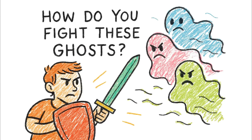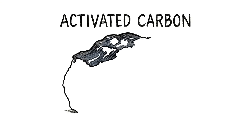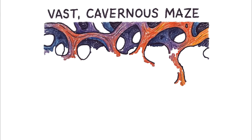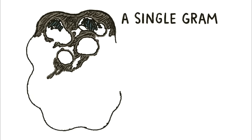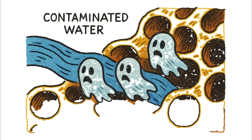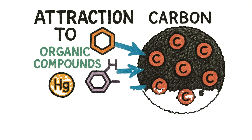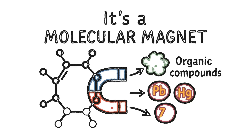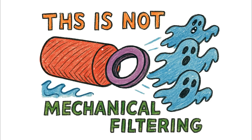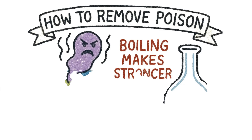So how do you fight these Ghosts? Not with heat, not with a simple screen — you fight them with chemistry. The solution is called adsorption, and the tool is activated carbon. Think of a piece of charcoal, but on a microscopic level it's not a solid block — it's a vast, cavernous maze of tunnels and pores. A single gram of this material can have the surface area of a football field. When contaminated water flows through it, the Ghosts aren't physically blocked like debris in a screen — they are chemically seized. The carbon atoms on the surface have a powerful attraction to these organic compounds and heavy metals. It's a molecular magnet. It latches onto them, pulling them out of the water and binding them permanently to its surface. This is not mechanical filtering — this is a chemical trap. The Ghosts check in, but they don't check out. That's how you remove the poison that boiling only makes stronger.